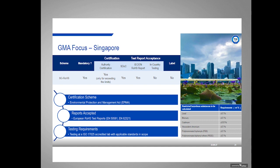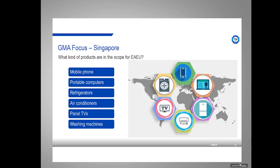Singapore is the next country. Their scheme is under the Environmental Protection and Management Act, called SG ROHS. It is a mandatory self-declaration scheme — unless a product is exceeding the limits, in which case it becomes a certification scheme. European or international test reports are accepted, so no in-country testing is required, and Singapore doesn't have any labeling requirements. They control just the first six substances. Products in scope include mobile phones, computers, refrigerators, air conditioners, panel TVs, and washing machines.